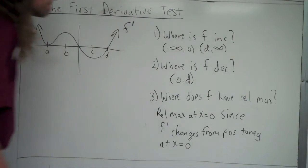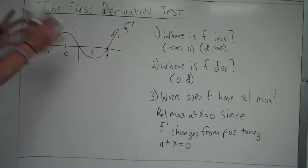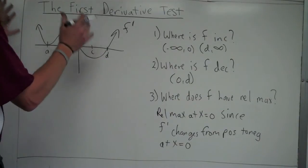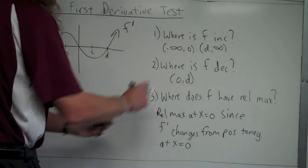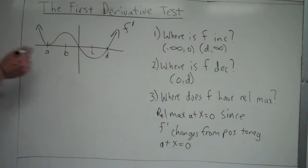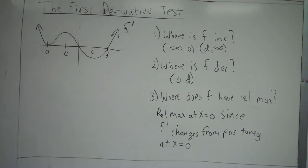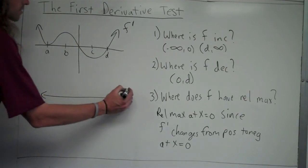To justify it: since f prime changes from positive to negative at x equals zero. Now, if you're having a tough time connecting this graph to these conclusions, it can be helpful to use this graph to make a first derivative sign chart. Let me show you how you can do that.